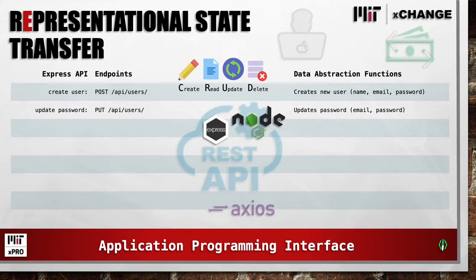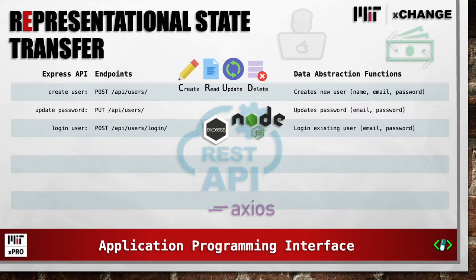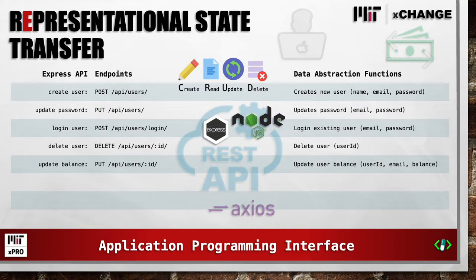Update password is a put route to API slash users, and requires the email and password. Login user is a post route to API slash users slash login, and that uses the email and password. Delete user is a delete route to API slash user slash ID using the user ID. Update balance is a put route to API slash users slash ID using the user ID, email, and balance.